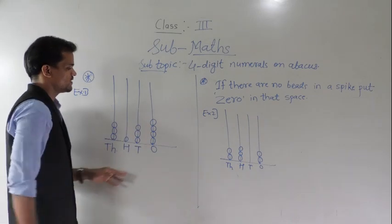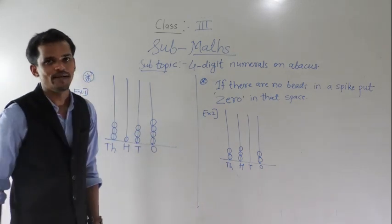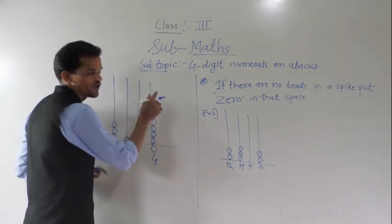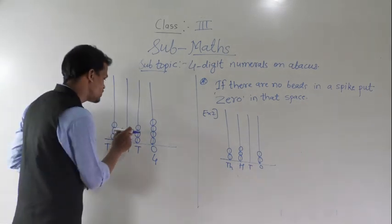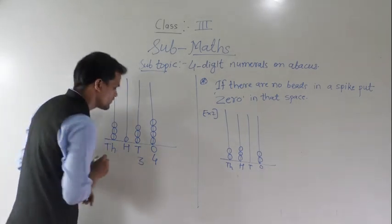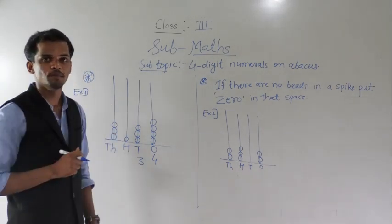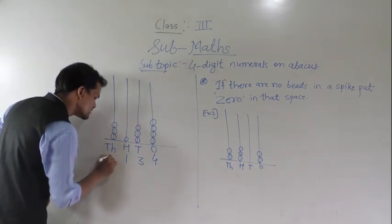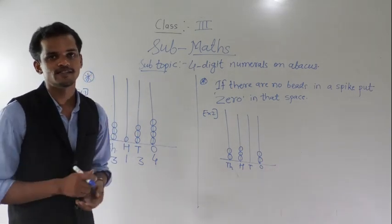See here: at the ones place spike, I put one, two, three, and four beads — so it shows four ones. At the tens place spike, I put one, two, three beads — so it shows three tens. At the hundreds place spike, I put one bead — it shows one hundred. And at the thousands place spike, I put one, two, and three beads — so it shows three thousands.